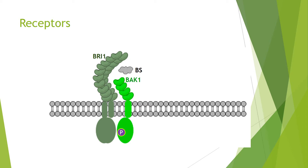When a brassinosteroid binds on the extracellular side, we get phosphorylation by BRI1 of the BAK1 activation loop in the kinase domain. This then activates the BAK1 kinase to phosphorylate the juxtamembrane region and the auto-inhibitory C-terminal region, removing its auto-inhibition and thus activating the BRI1 kinase.